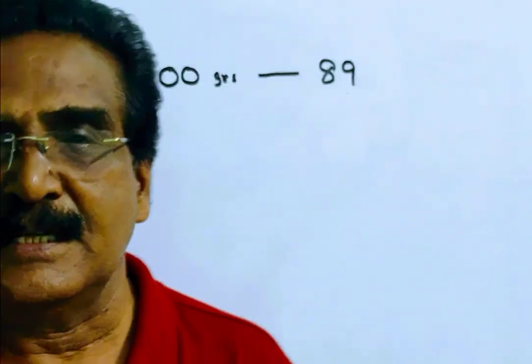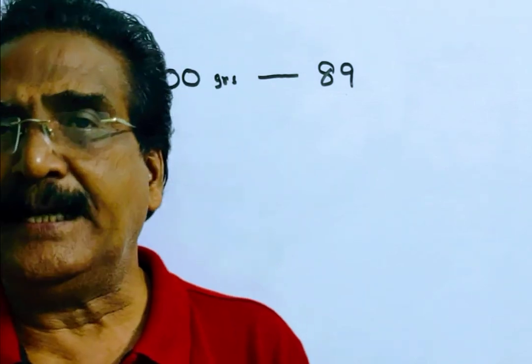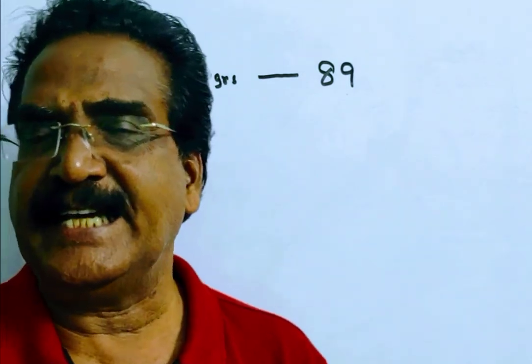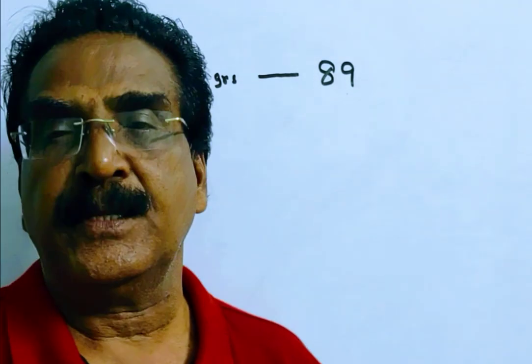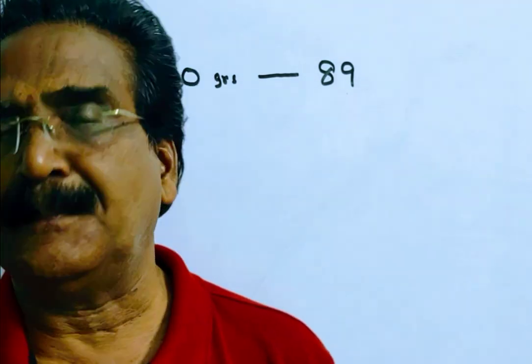The problem is given in the description box. A shopkeeper cheats to the extent of 11% while buying and selling. Then what is his net profit percent?